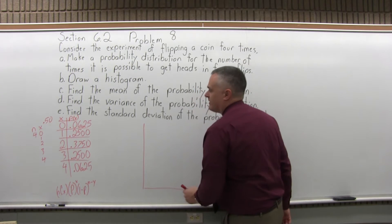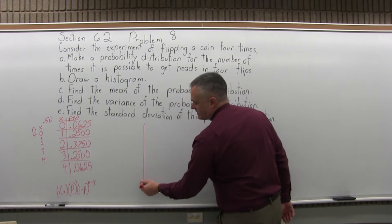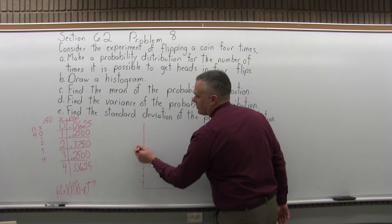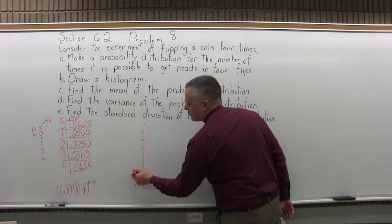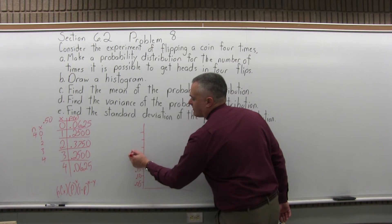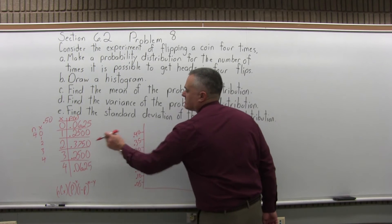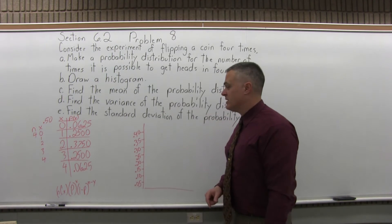So for my bar graph, the biggest probability I'm going to have to deal with is essentially 37.5%. So let's go 5, 10, 15, 20, 25, 30, 35, 40 — that will be enough. I'll label the scale going up the side: 0.05, 0.10, 0.15, 0.20, 0.25, 0.30, 0.35, 0.40. My biggest probability is 0.375 something, so 0.40 is where I can stop. You can put in more if you want, but that's enough.